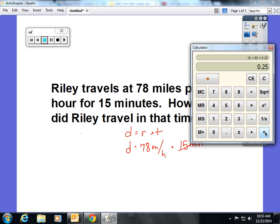on your calculator, and that would be 0.25 of an hour. Now you can multiply that by 78 miles per hour, and the distance that Riley travels is 19.5 miles.